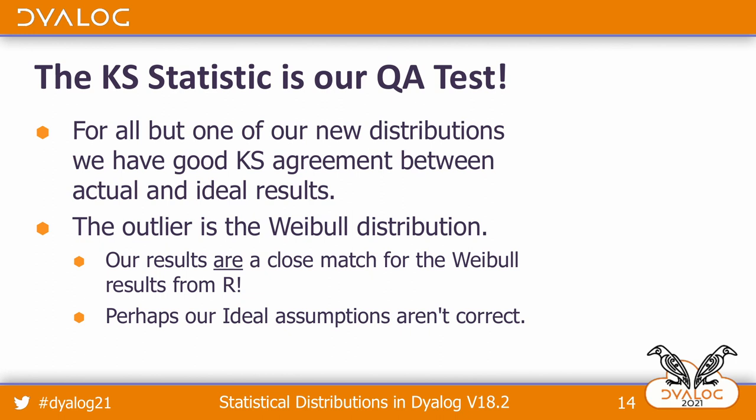I ran this on all the new distributions and we have good agreement with the KS statistics between actual and ideal for all but one. The outlier is the Weibull distribution.